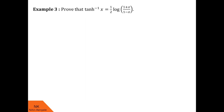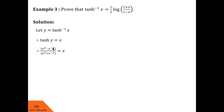Now let us see example 3. Here we have to prove that tanh⁻¹(x) = ½ · log((1 + x) / (1 − x)). Let y = tanh⁻¹(x), then tanh(y) = x. The exponential form of tanh(y) is (e^y − e^(−y)) / (e^y + e^(−y)). Writing e^(−y) as 1/e^y and cross multiplying, we get (e^(2y) − 1) / (e^(2y) + 1), and the e^y terms from numerator and denominator cancel, leaving (e^(2y) − 1) / (e^(2y) + 1) = x.